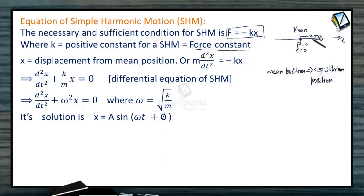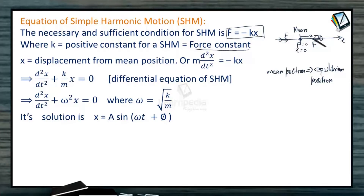the force acting on it is proportional to x and opposite to the displacement — so force acts back toward the mean position. That is why such forces are called restoring forces, because they are always trying to restore the position of the particle to the mean position, which is the most comfortable position for the particle, where its potential energy is minimum and net force is 0.